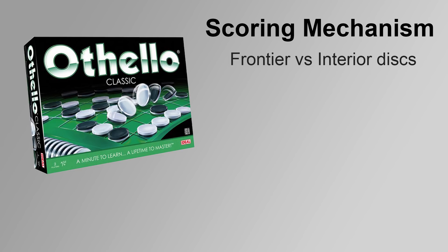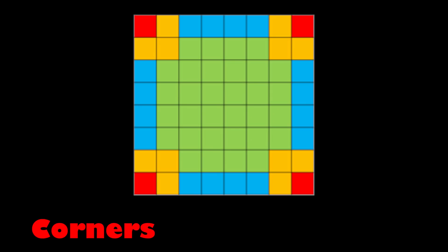We're trying to maximize the number of interior disks we have while minimizing the number of frontier disks. We also want to factor in the different types of positions on the board. So you have corners, you have buffers, and you have edges. So corners and edges are pretty good. Corners being the best. That's weighted highest. We want to try to get that.